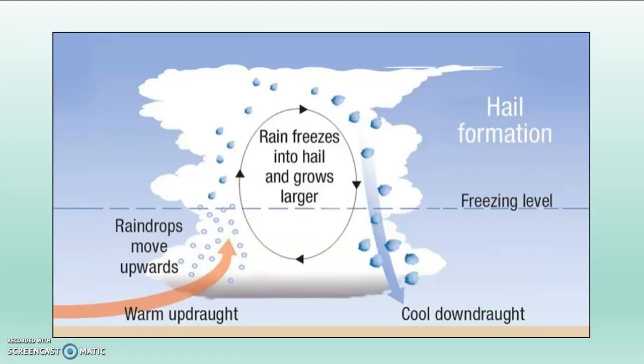Take a look at this diagram. Notice on the left-hand side it says 'warm updraft' — that's a warm wind blowing up into the clouds. At the bottom of the cloud, raindrops are forming, but because of that vertical updraft, those raindrops instead of falling to the ground are thrown higher up into the cloud. Once they pass the dotted line that says 'freezing level,' the temperature is below 32 degrees Fahrenheit or zero degrees Celsius, and the water freezes solid.